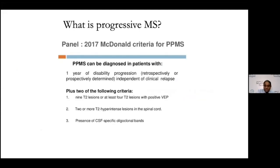Progressive MS is a small percentage of cases. There is now a specific set of criteria for progressive MS, important because treatment became available from 2019. It can be diagnosed in patients with one year of disability progression — determined retrospectively or prospectively, independent of clinical relapses — plus two additional listed criteria. Early diagnosis of progressive MS is important.